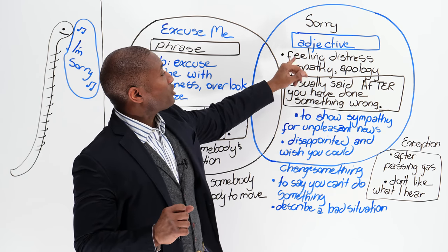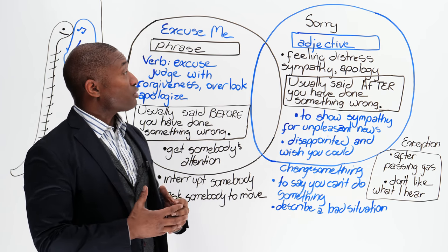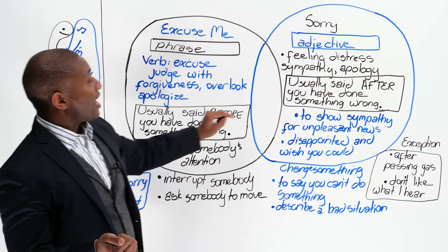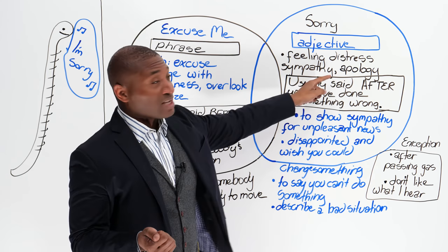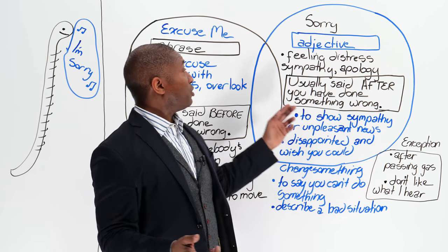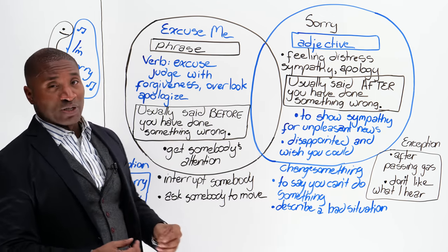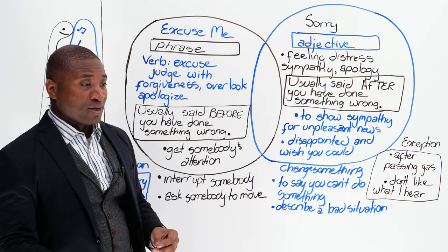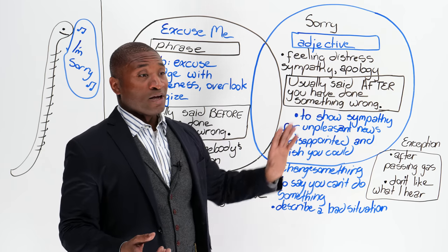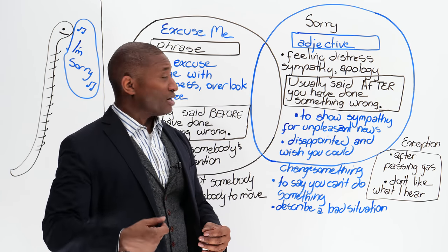When we talk about sorry, it means to feel distressed — something is stressing you out. It also means to offer sympathy, which you don't see with excuse me. And it's an apology. This is where they come together, and this is where people have a problem, because sorry is an apology, and excuse me can also be used to apologize for doing something. But apologize is a verb and an apology is a noun, so we're offering two different things when we use these words.